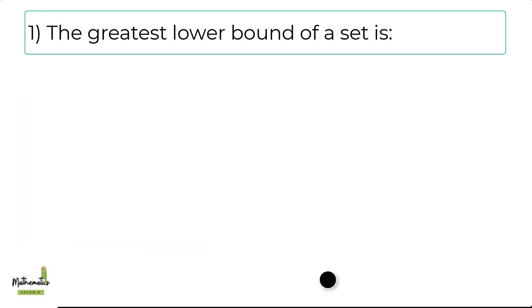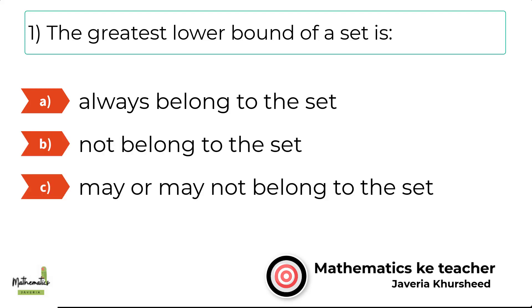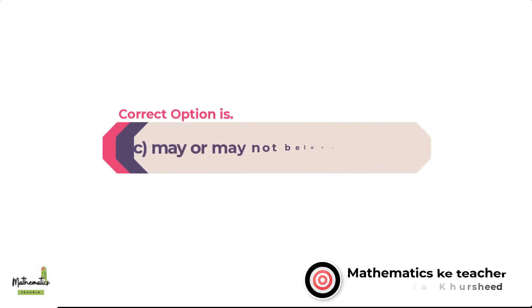Number 1. The greatest lower bound of a set is: A. Always belong to the set. B. Not belong to the set. C. May or may not belong to the set. D. None of these. The correct option is C. May or may not belong to the set.